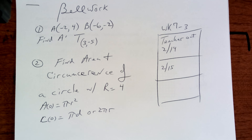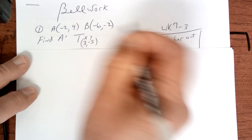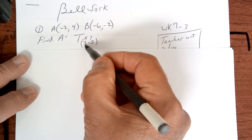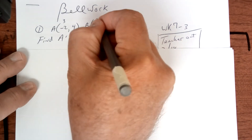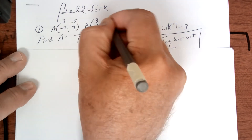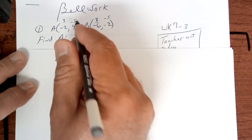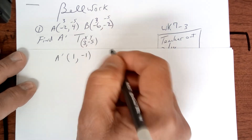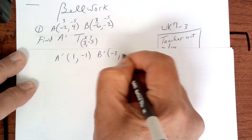Hello and good morning. Let's take a look at today's work. Yesterday you had some translation — so this is your X and your Y. You want to slide it to the right and then down. The way you do that is you add three to your X's in this case, and then put a negative five. Your new point A prime is going to be positive 1 and negative 1, and your B prime is going to be negative 3 and negative 7. That's how you do that.